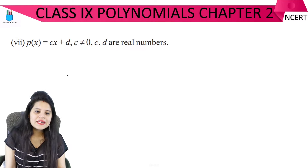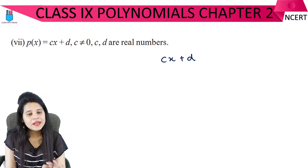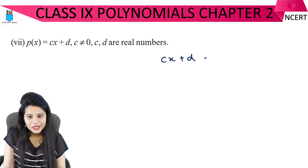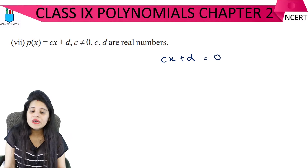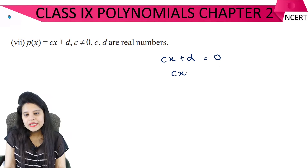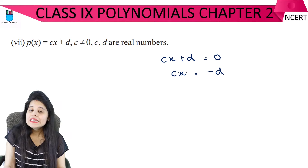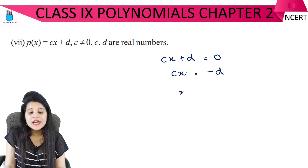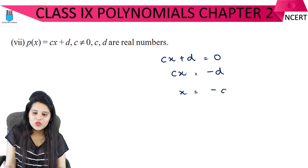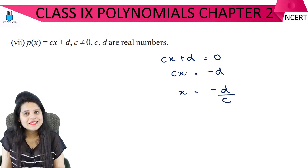The last part is p(x) equals cx plus d, where c and d are real numbers and c is not equal to 0. Setting cx plus d equal to 0, we move d to the other side to get cx equals minus d. Dividing both sides by c gives x equals minus d upon c.